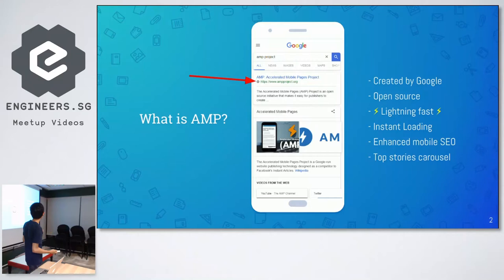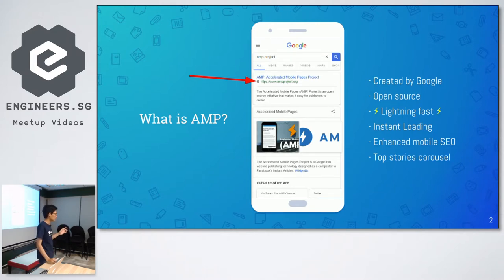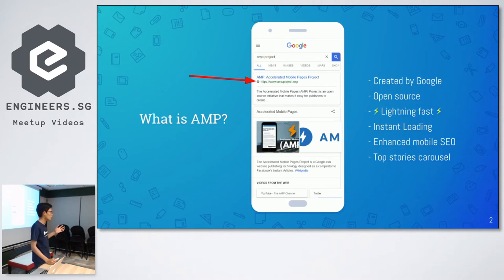What is AMP? AMP is a new technology that was created by Google and it's now an open source project. In the past year, contributions to the AMP project are about 70% from people outside Google and about 20% from people inside Google, so it's becoming more of an open source project than one controlled by a big organization.